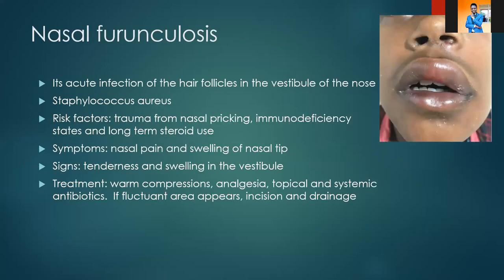Next we are going to talk about nasal furuncosis. Nasal furuncosis is an acute infection of the hair follicles in the vestibule of the nose. The hair follicles in the nasal vestibule are also known as vibrissae. Risk factors for nasal furuncosis may include trauma — nasal picking, putting your finger or handkerchief and rubbing the nasal vestibule — causing abrasion or irritation.